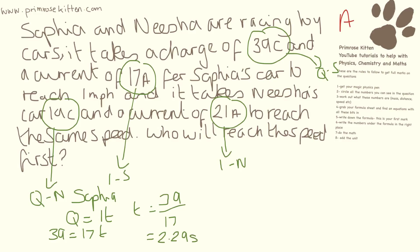Just change color to make things a bit clearer for you. So here we have Q equals I times T. Q for Nisha was 19. Current was 21. And that is times time. So it is going to be 19 divided by 21 equals the time. 19 divided by 21 gives us 0.90 seconds. So Nisha's car is going to take less time to get to the same speed.